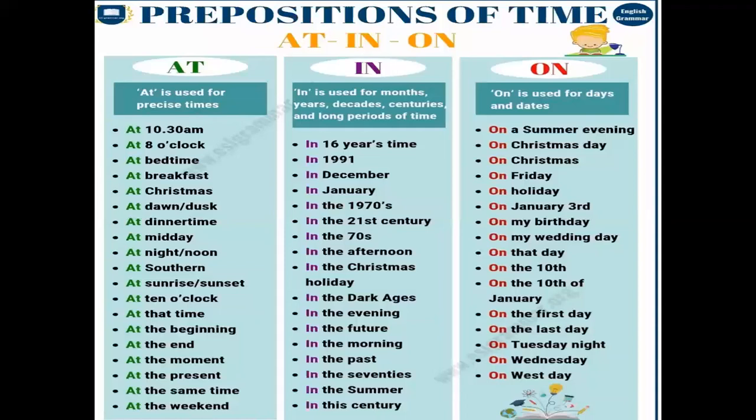Note that 'at' is used for very definite points of time like noon and night — for example, 'it is 12 at noon' and 'he goes to bed at night.' Noon and night are definite points of time, so we use 'at' for these words.